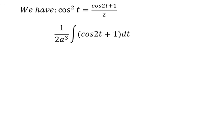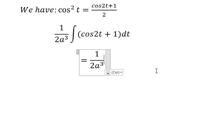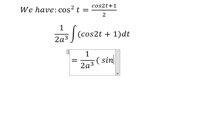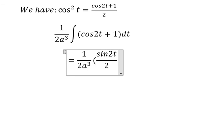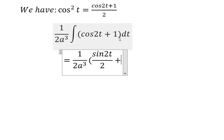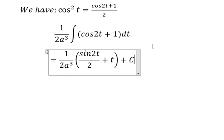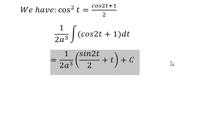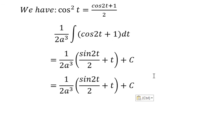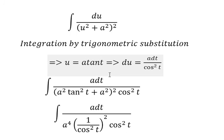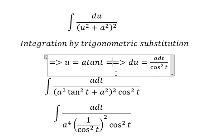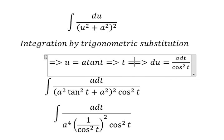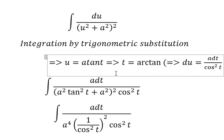We factor out a to the power of 4. We have 2t over 2. The integral of 1 is just t. Now we change back to u. To find t, we use arc tan of u over a.